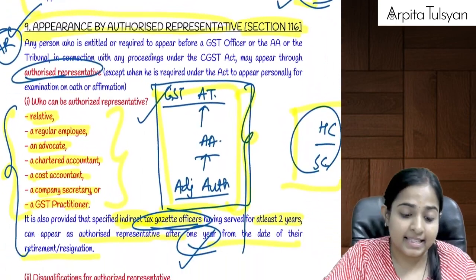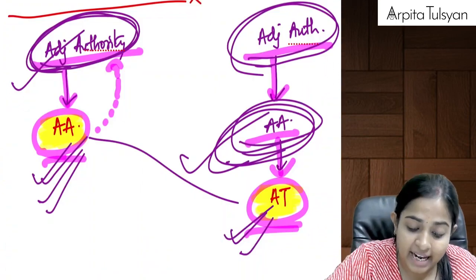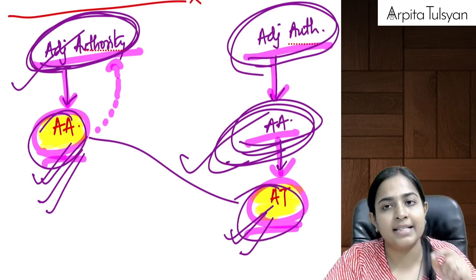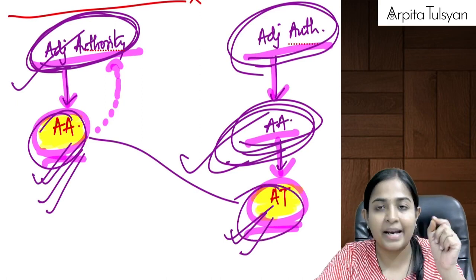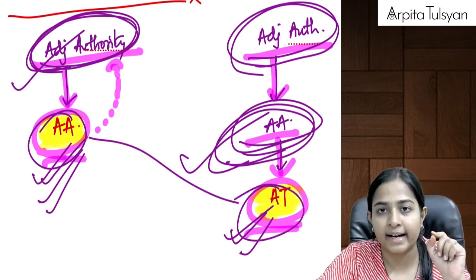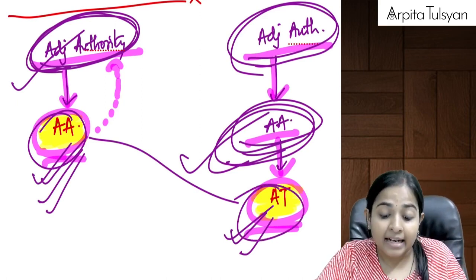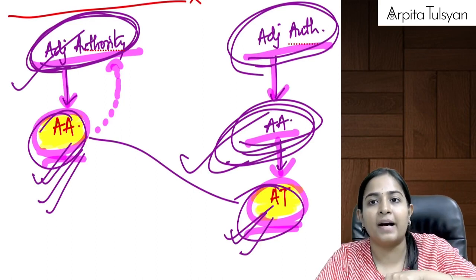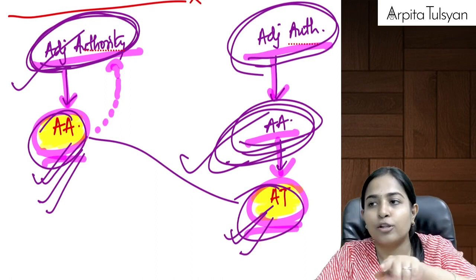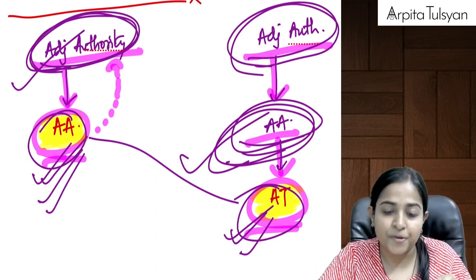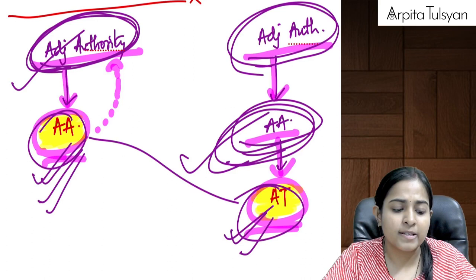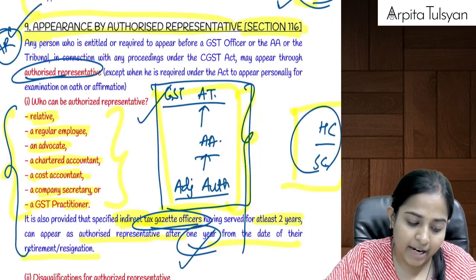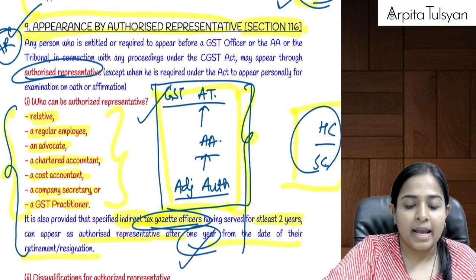Whenever AA or GSTAT accepts new evidence, they make a note of it in writing. The respondent — the opposite party — must also be given an opportunity to examine those witnesses and documents.